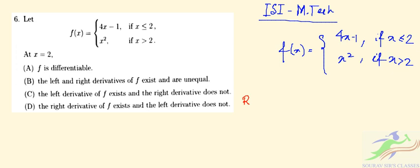If we check the right derivative R(f(2)), we can write it as limit h tends to 0 plus, f(2+h) minus f(2) divided by h.